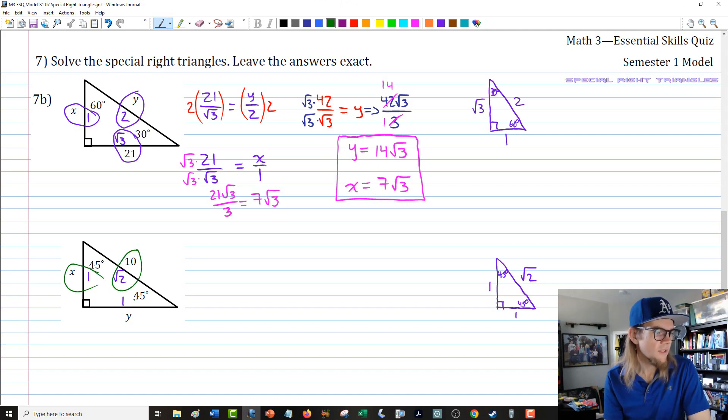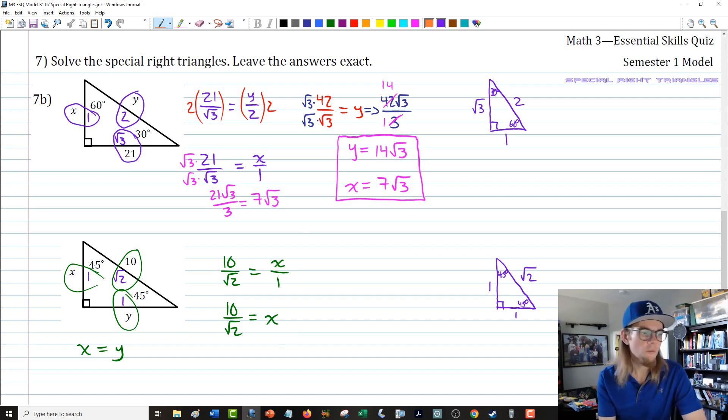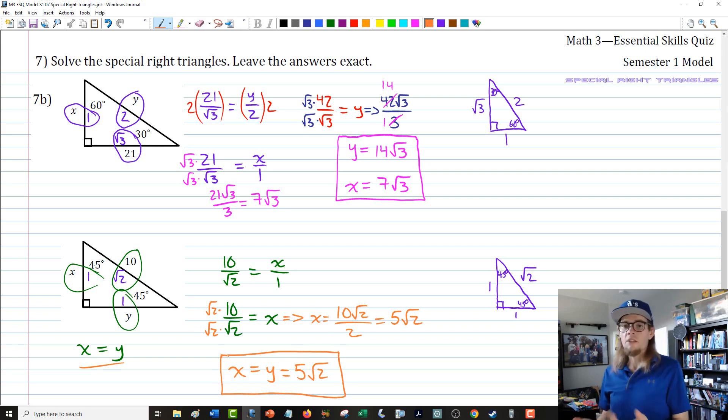For our second one, we're going to follow the same strategy. What's nice here is x and y are always going to be the same length, so we don't have to do this one twice. I'm only going to do it for x and then we'll point out that x has to equal y automatically. We're going to have 10 divided by the square root of 2 equals x over 1. 10 over root 2 isn't rationalized, so we need to multiply up and down by the square root of 2. We'll get that x equals 10 square root of 2 over 2, which simplifies to 5 root 2. Since x equals y, we'll write x equals y equals 5 root 2.